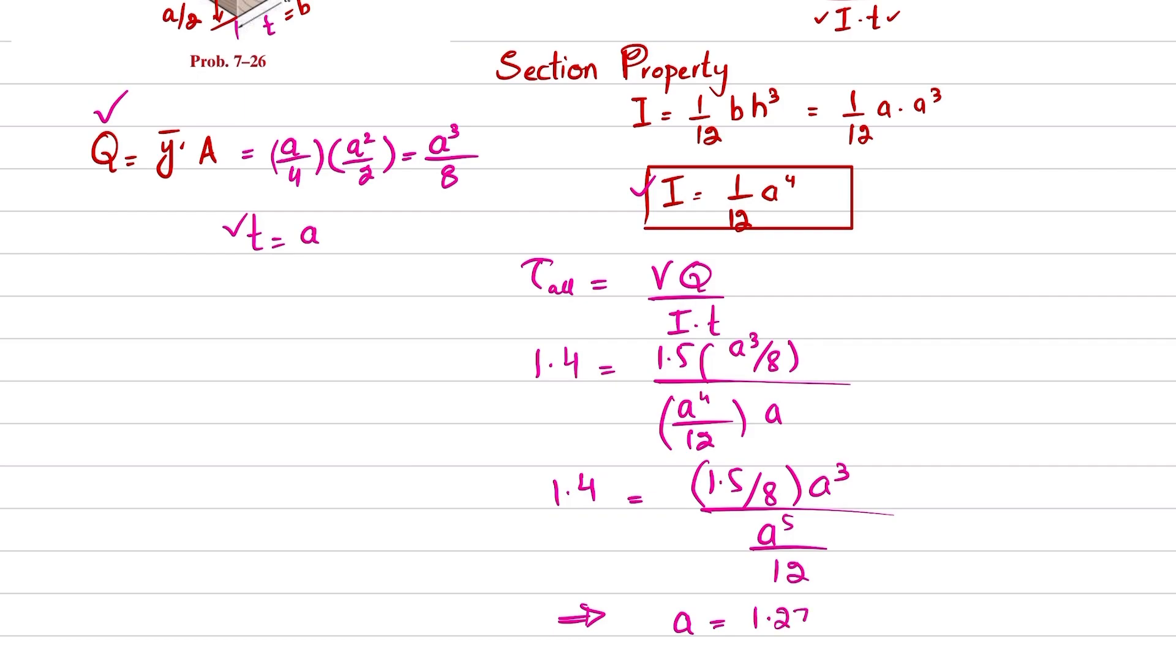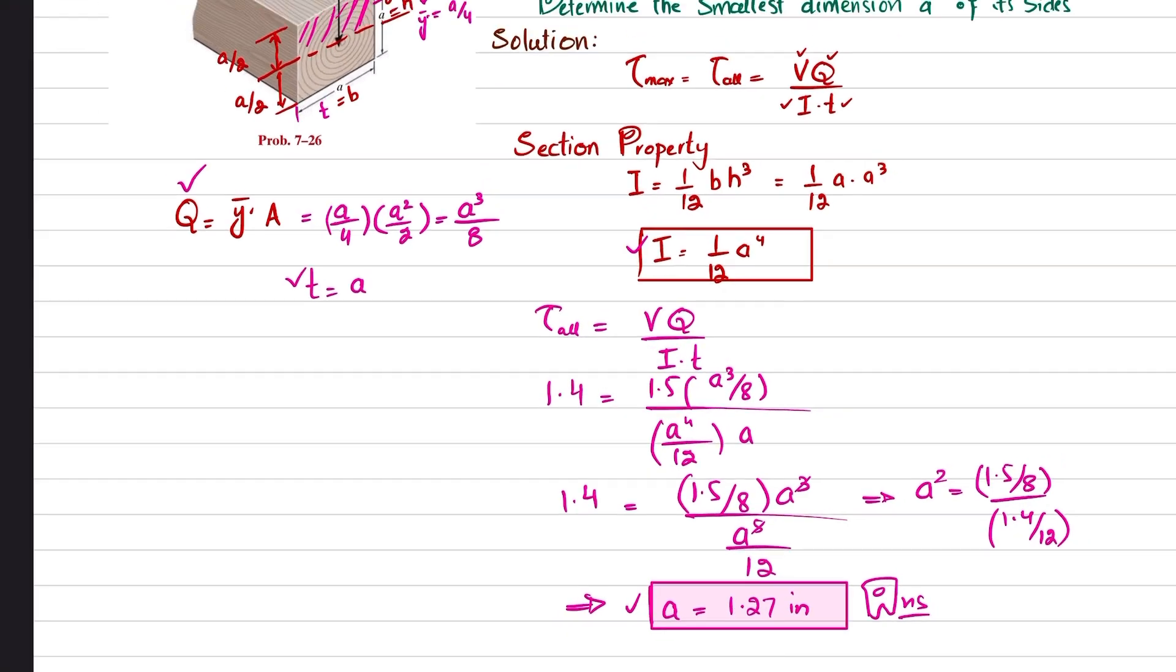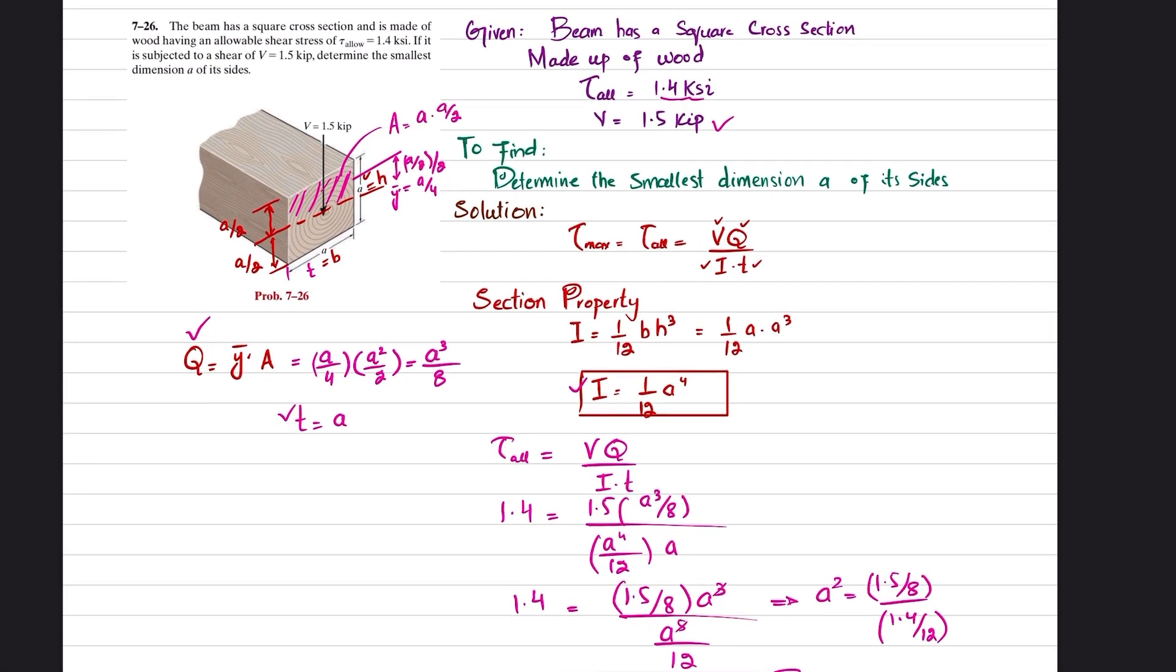You can further simplify it—I will do it for you. It will be equal to a², because this will cancel with this. So a² equals 1.5/8 divided by 1.4/12. And if you take the root of this, you will get a is 1.27. This was all about problem 7-26.